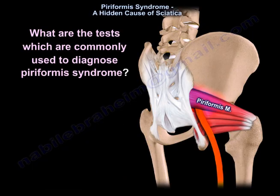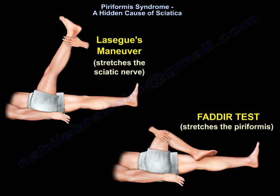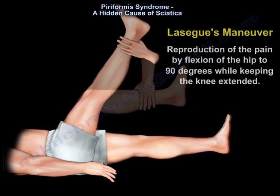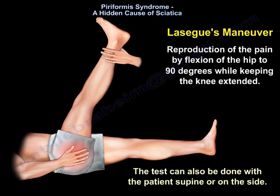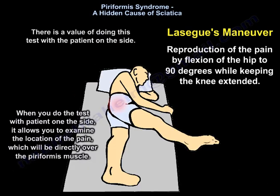What are the tests commonly used to diagnose piriformis syndrome? The Lasègue's maneuver stretches the sciatic nerve, and the FAIR test stretches the piriformis. In the Lasègue's maneuver, you reproduce the pain by flexing the hip to 90 degrees while keeping the knee extended. The test can be done with the patient supine or on the side. Doing the test with the patient on the side allows you to examine the location of pain directly over the piriformis muscle.